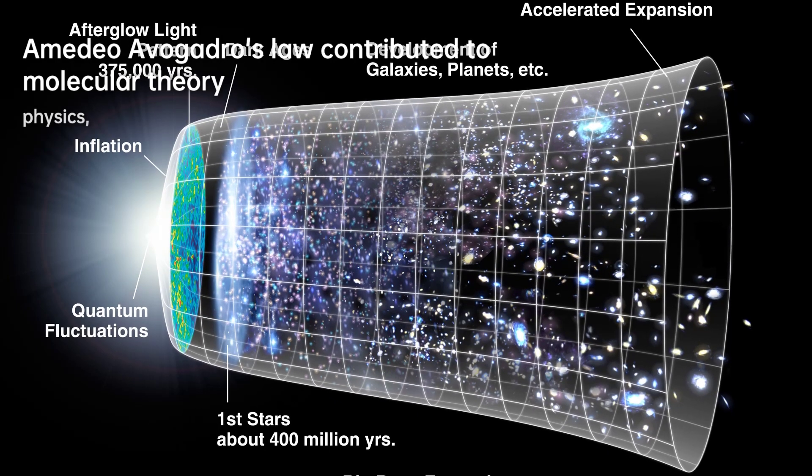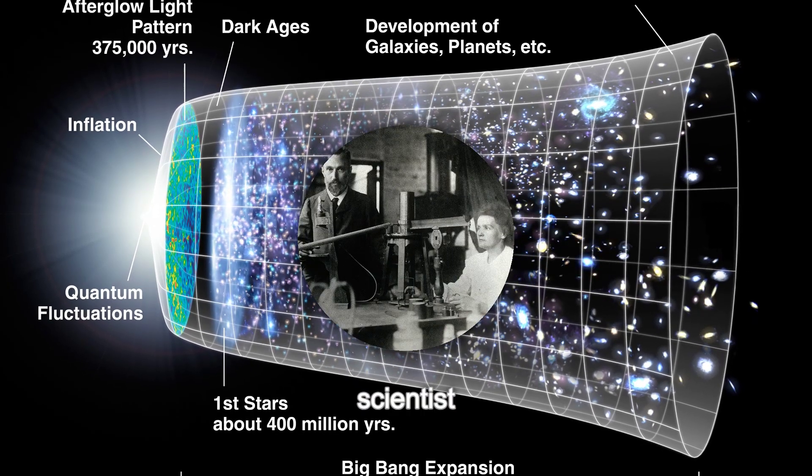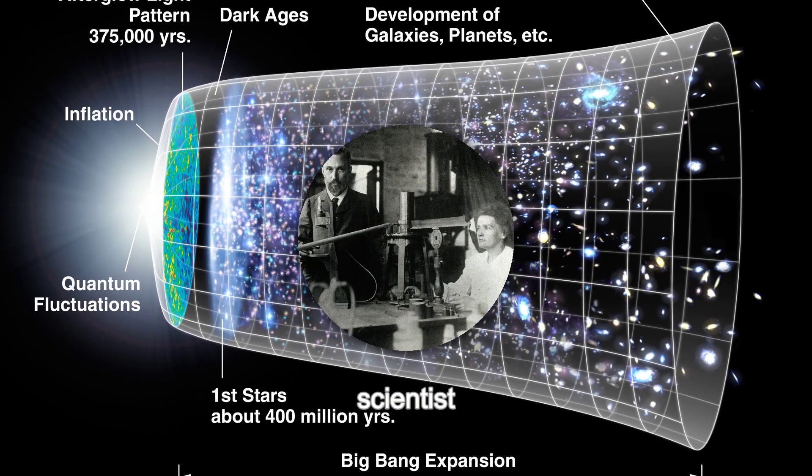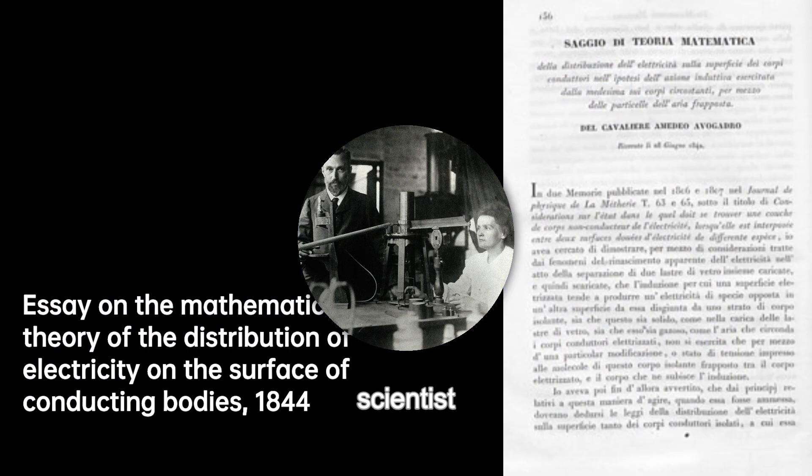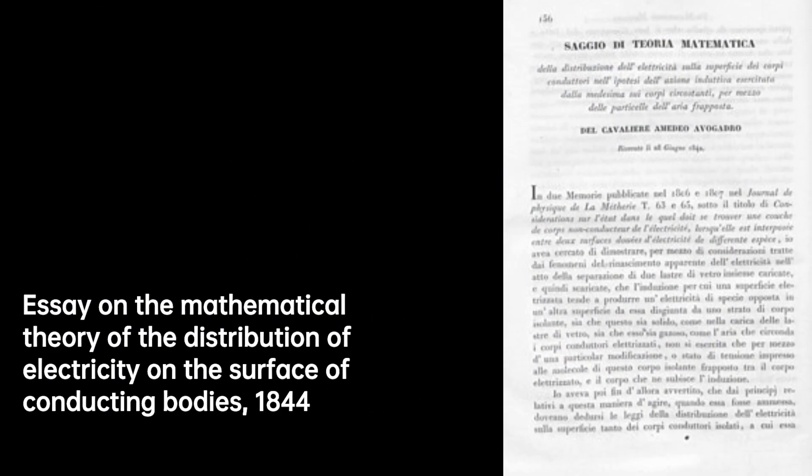In the realm of scientific giants, one name stands out: Amadeo Avogadro, an Italian scientist who forever changed our understanding of molecules. Born as Lorenzo Romano Amadeo Carlo Avogadro, Count of Quaregna and Cerrito, his contributions to molecular theory have left an indelible mark.